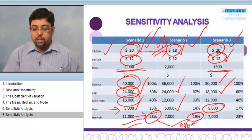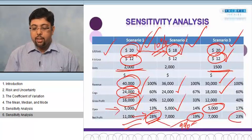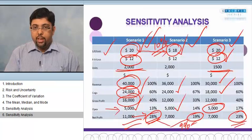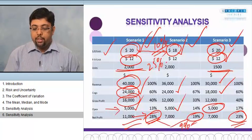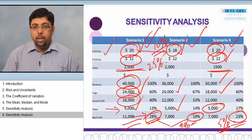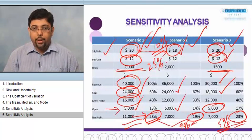OPEX or the operational expenses are still the same. You will see that the total profitability is decreasing from 28% to 23%. If the volume is going to decrease by 25%, the profitability will be decreasing by 5%. This is the type of scenario analysis.